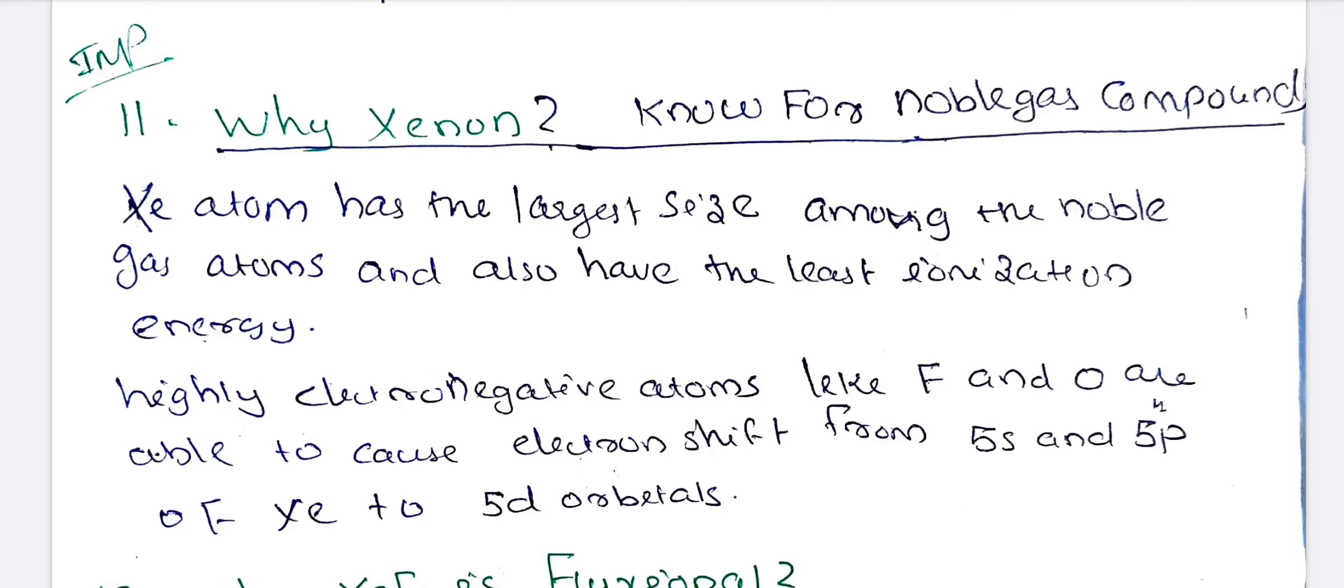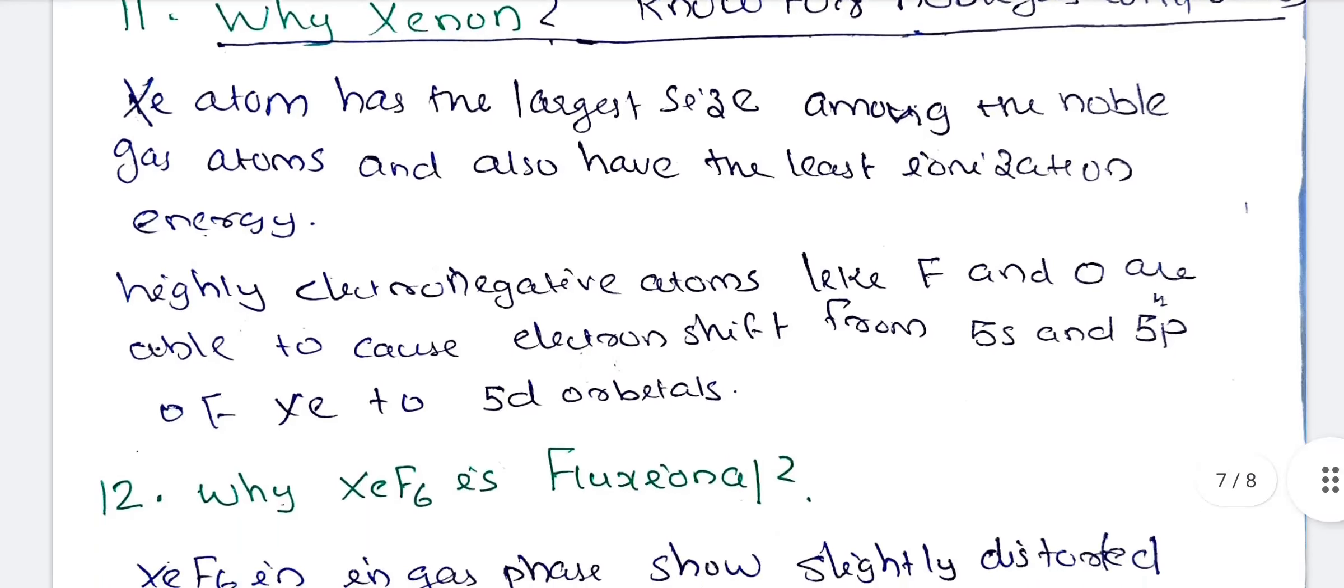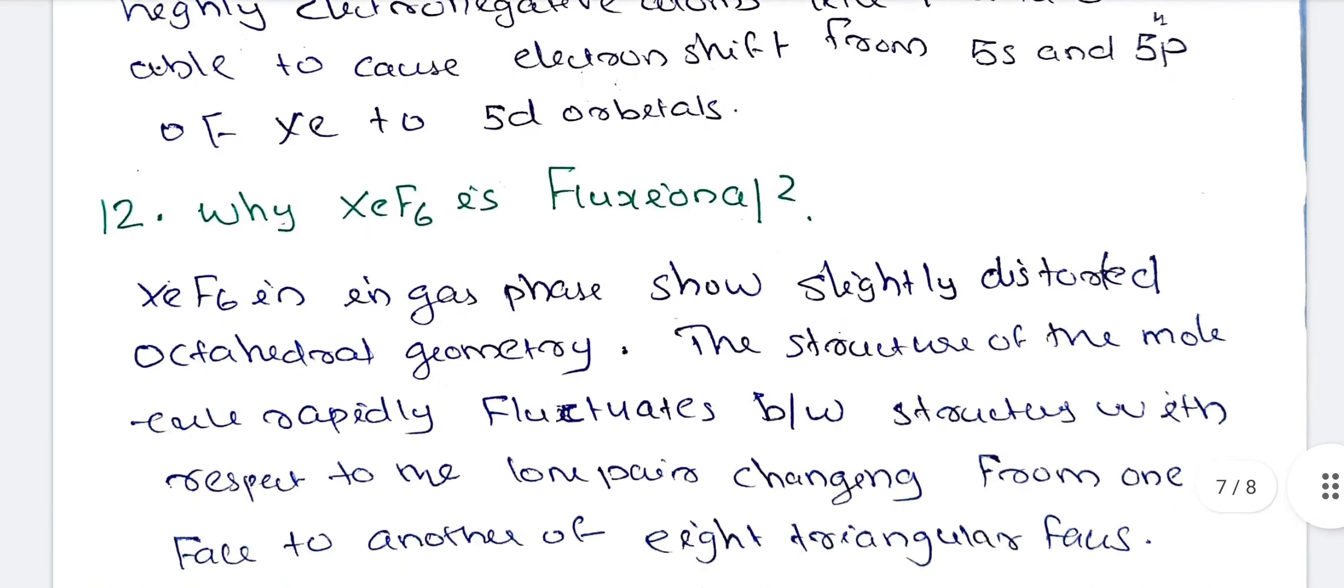Xenon atom has the largest size among the noble gas atoms and also has the least ionization energy. The largest atom has the least ionization energy. Highly electronegative elements like fluorine and oxygen are able to cause electron shift from 5s to 5p of Xenon to 5d orbitals.